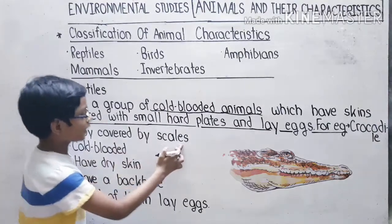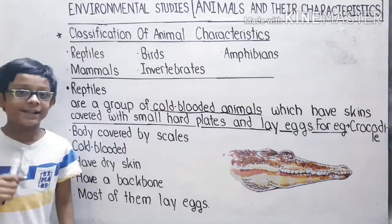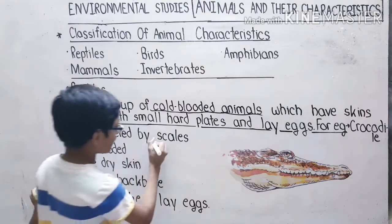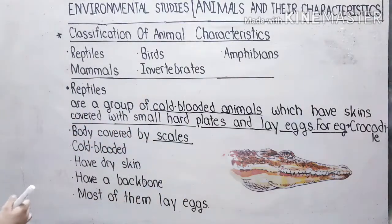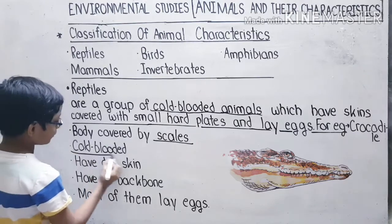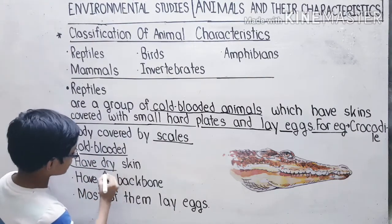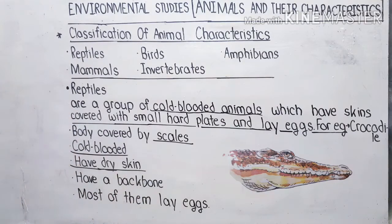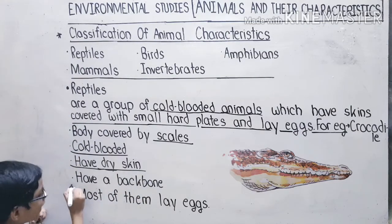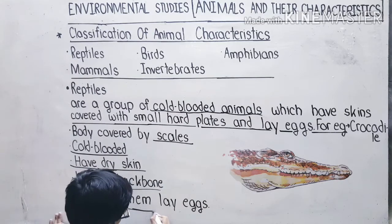Their bodies are covered by scales. They are cold-blooded and have dry skin. Reptiles have dry skin. They have a backbone, and most of them lay eggs.